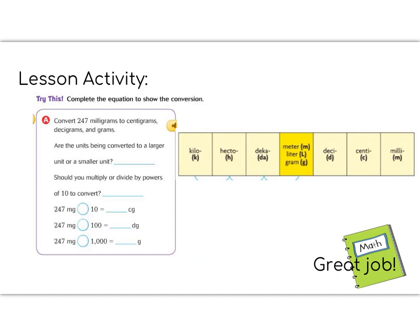Today's lesson activity is the try this part A right underneath where we were just looking. I've gone ahead and copied a metric chart next to it to help explain how to solve this problem. Remember, you can look in your agenda for this, or you can look at the previous page.